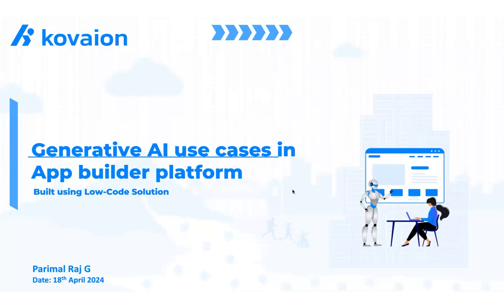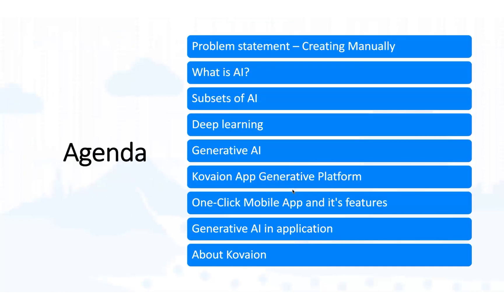I hope it is visible for all of you. Let's start with the agenda of this webinar. Today I am going to cover the topic of generative AI use cases in the App Builder platform. Our agenda: first we start with the problem statement, then basic concepts of AI, then generative AI, the solution for the problem statement, key features of the solution, and generative AI in application.